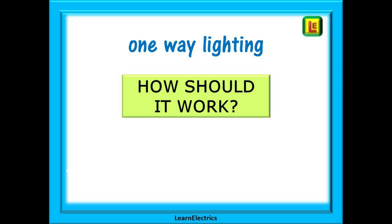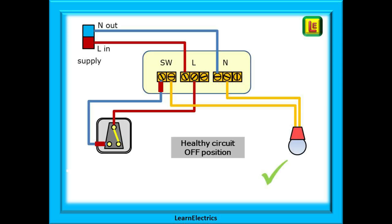First one-way lighting. How should it work and how is a healthy and correct one-way circuit wired up? Let's look at some simplified drawings. All of the following drawings will use the same pattern. At the top left is the incoming phase and the outgoing neutral.